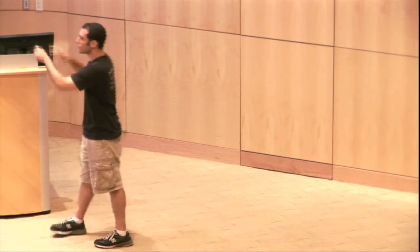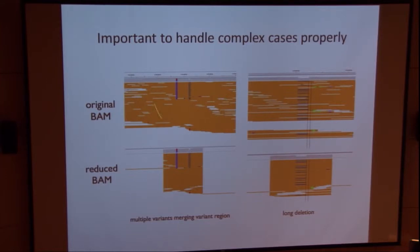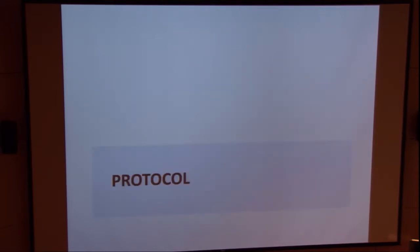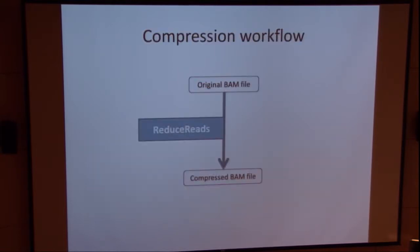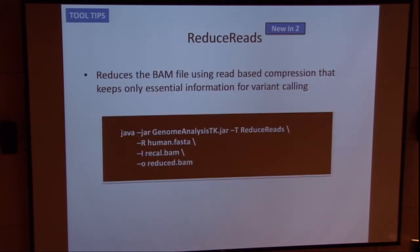Here's a closer view. These are the heterozygous sites — there's a SNP and a deletion right here — and those regions are kept as normal. The other regions are collapsed down to one read. It doesn't really look like this in the BAM file; I'll show you a much cooler example afterwards. So what do you have to do to run it? It's totally vanilla and easy. You have your original BAM file, run it through Reduced Reads, and you have your compressed version. It doesn't get easier than this — the easiest GATK command there is: Reduced Reads, reference, input, output.